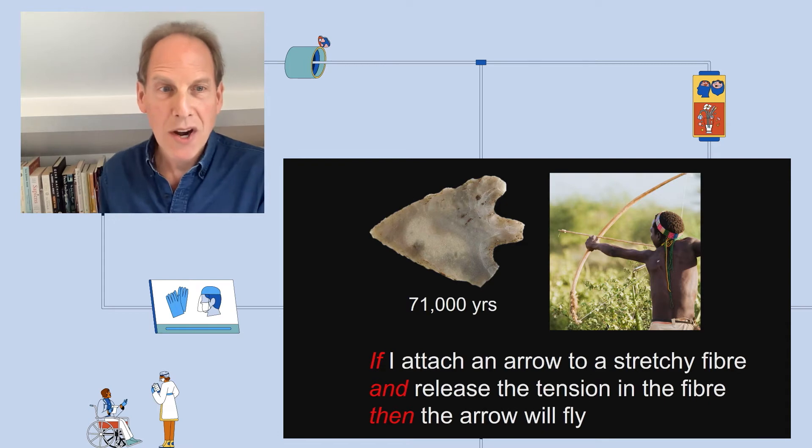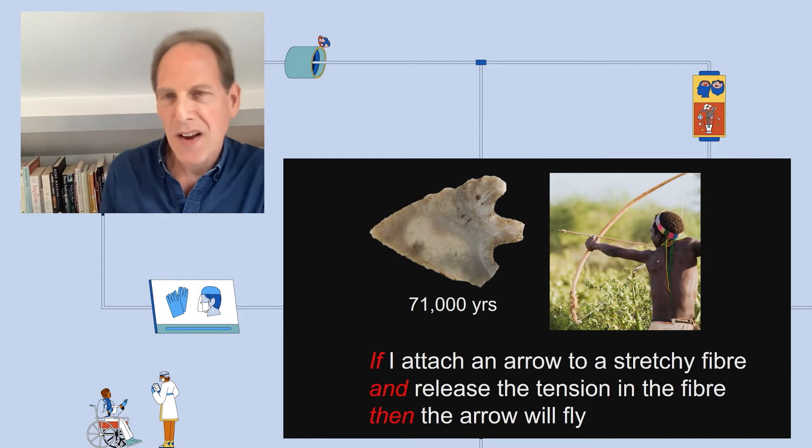And 71,000 years ago we see the first bow and arrow. So again, the same if-and-then algorithm: if I attach an arrow to a stretchy fiber and release the tension in the fiber, then the arrow will fly.